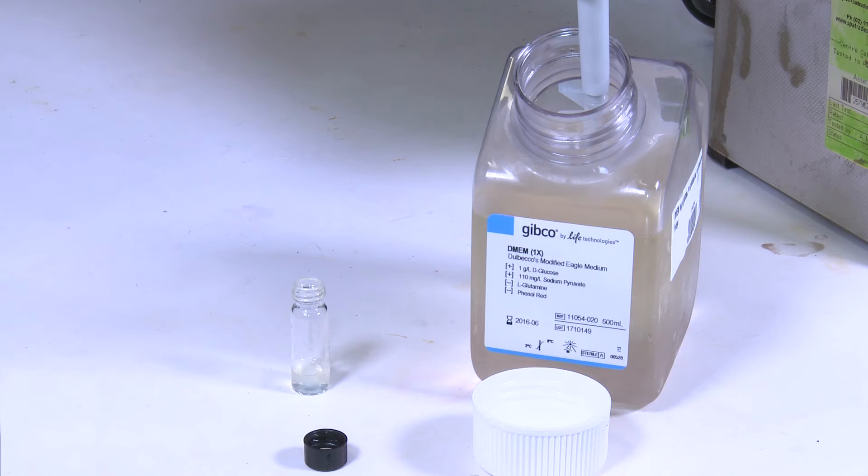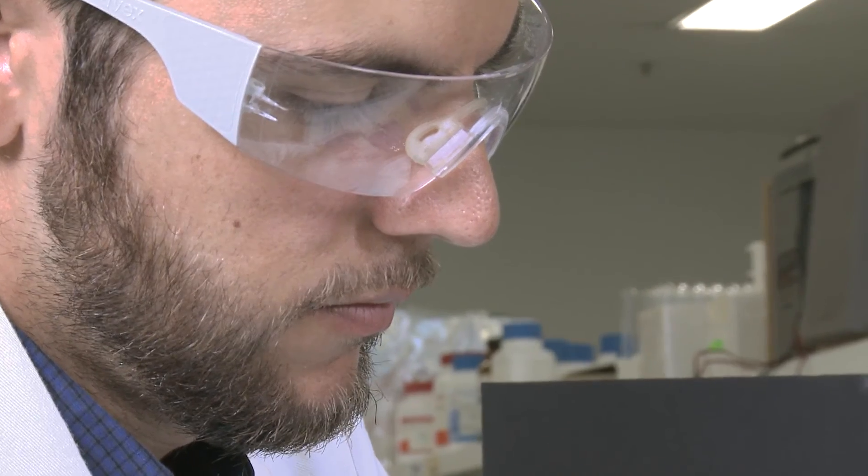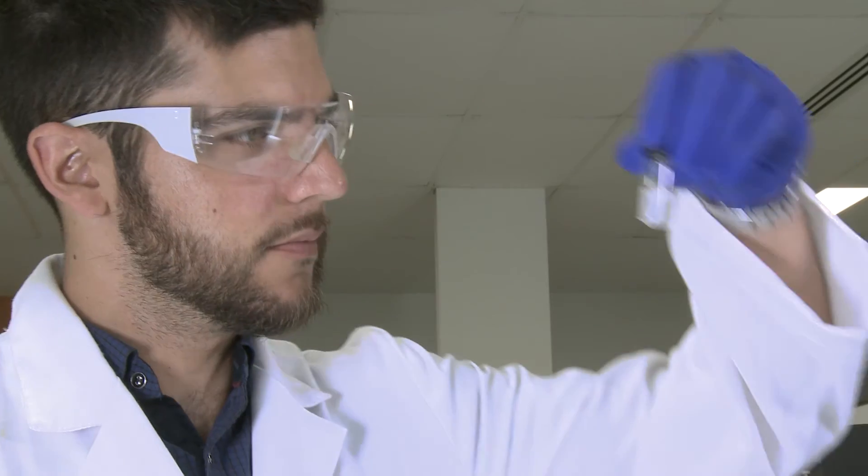Secondly, we'll perform a solvent switch. We prepare the solution as before but this time we add an aliquot of cell culture medium which screens the charges on our gelator and forms a gel.